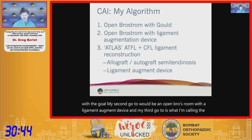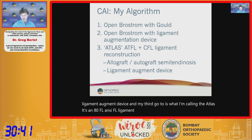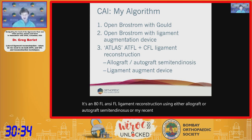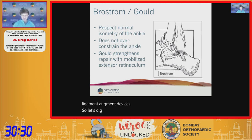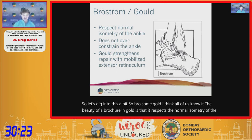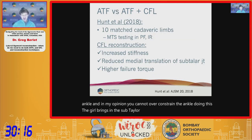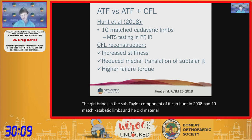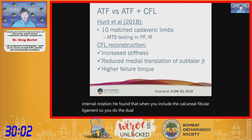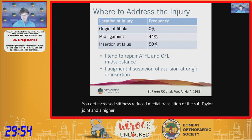The ATLAS technique uses ATFL and CFL reconstruction with either allograft, autograft semitendinosus, or ligament augment devices. The beauty of the Brostrum-Gould is that it respects normal ankle isometry and, in my opinion, cannot over-constrain the ankle; the Gould component addresses the subtalar joint. Kent Hunt's 2008 cadaveric study showed that including the calcaneofibular ligament — doing a dual ligament reconstruction — increases stiffness, reduces medial subtalar translation, and increases failure torque.